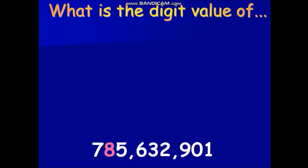And lastly, what is the digit value of the number 2? 2,000,000 is correct. 2,000 is correct. Great job, guys.